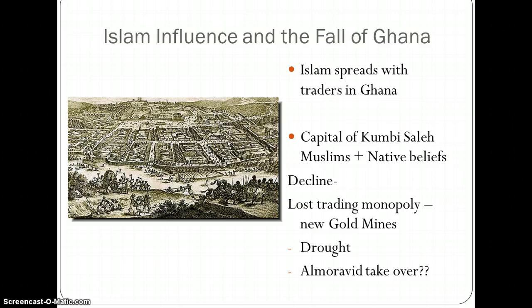Let's talk about how Islam comes in, and then we'll talk about how Ghana falls. Islam comes into Ghana through cultural diffusion. When you trade with people, you don't just trade goods — ideas get traded, and religion gets traded. This happened along the Silk Road too; that's how Buddhism and Islam spread along the Silk Road as well.